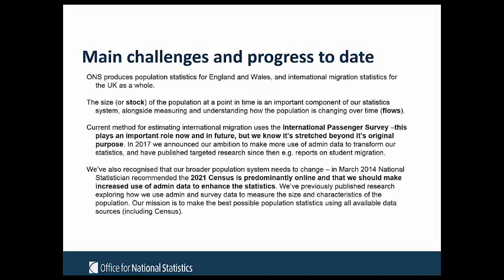Hi, I'm Becca Briggs from the Centre for International Migration at ONS. From an ONS perspective, we produce population statistics for England and Wales and international migration statistics for the UK as a whole. The size or stock of the population at a point in time is a really important component of our statistics system, alongside measuring and understanding how that population is changing over time — the flows. From an international migration perspective, our current estimation method uses the International Passenger Survey.